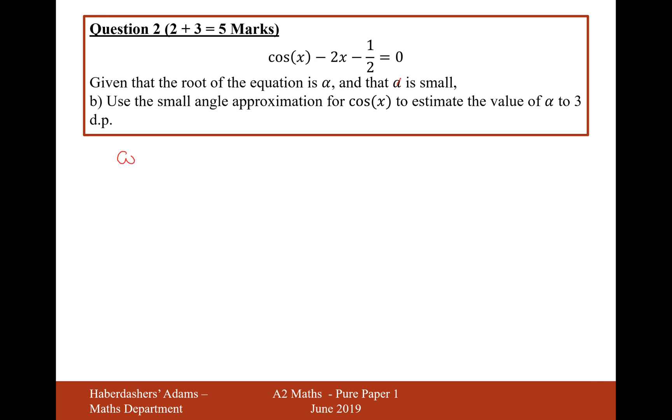Well, cos of x when x is small is approximately 1 minus one-half x squared. Now that's in the formula booklet when x is small. So you can just recall that from the formula booklet. So now we've just got to solve 1 minus... So 1 minus one-half x squared, that's the cos x bit, minus 2x minus one-half equals zero.